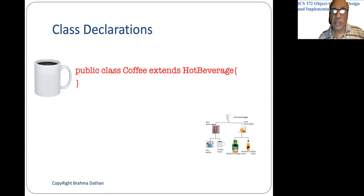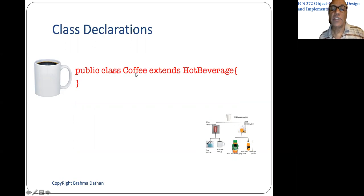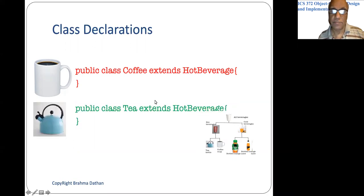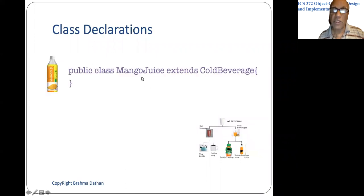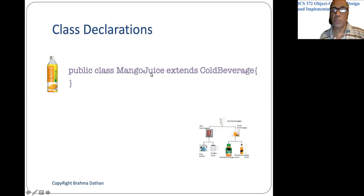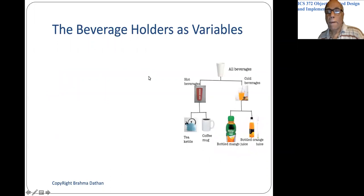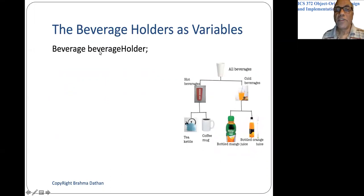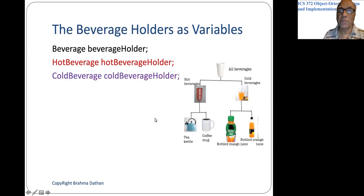For the leaf class declarations: Coffee would extend HotBeverage — it is even more specialized, so a reference of type Coffee can only store a coffee object. Similarly for Tea. The same applies for MangoJuice — a reference of type MangoJuice can only store mango juice objects. And similarly for OrangeJuice. So the Beverage holder is like the styrofoam cup, HotBeverage holder is like the hot-only cup, and ColdBeverage holder is like the cold-only cup, and so on.